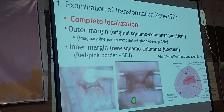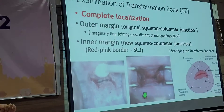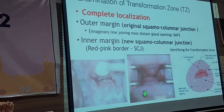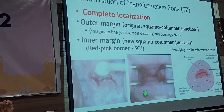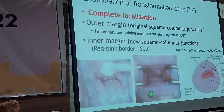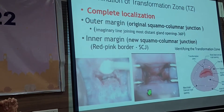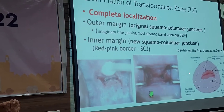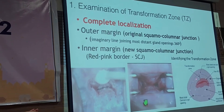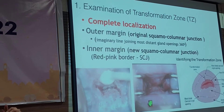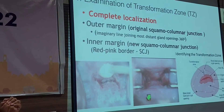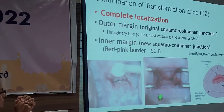The next step is localization of the transformation zone. Colposcopy is primarily done for cervical neoplasia diagnostic purposes, so if something abnormal or suspicious has come up, we must localize the transformation zone completely. The outer margin is the farthest points of the gland openings — an imaginary line through the crypts or gland openings, all 360 degrees around — and the inner margin is the new squamocolumnar junction, the junction between the pink squamous epithelium of the ectocervix and the red columnar epithelium of the endocervix.